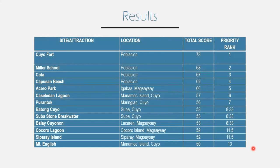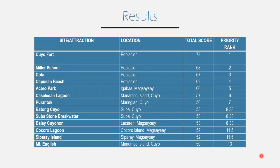Now let's jump into the results of my research. For site evaluation, Cuyo Fort ranked first with 73 scores, followed by Miller School with 68 points, Cota with 67 points, Capusan Beach with 62 points, Acero Park with 60 points. Other tourism sites that also received high scores are Kasilidan Lagoon with 57 points, Purantok with 56 points, Batongcuyo with 53 points, Suba Stone Breakwater with 53 points, Balaycuyo Noon with 53 points, Kokoro Lagoon with 52 points, Siparay Island with 52 points, and Mount English with 50 points. These tourism sites met the criteria formulated by the Department of Tourism, and 7 out of 13 tourism sites are actually historical sites.